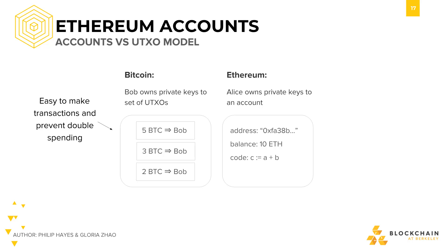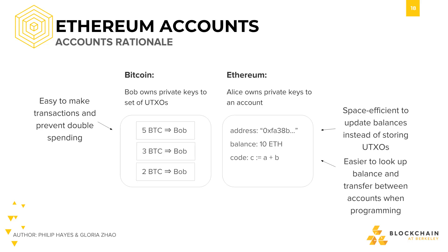Think back to the piggy bank analogy from week one. In Ethereum, private keys prove ownership of an account, which tracks a current balance. Accounts are more space efficient than UTXOs since, to calculate your balance, you only have to reference your account rather than summing up across all your UTXOs. Also, since our ultimate goal is to support smart contracts, it's much cheaper and easier to look up an account balance and also transfer between accounts when we have an account model rather than a UTXO model.